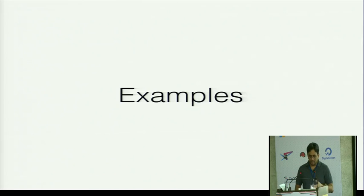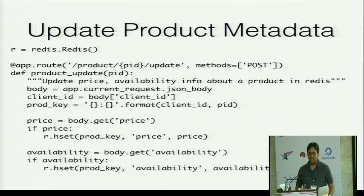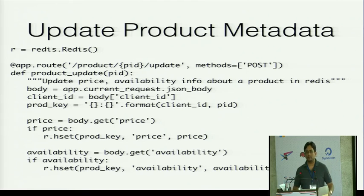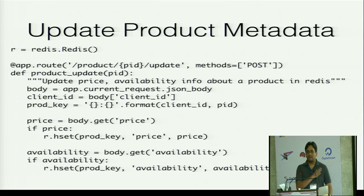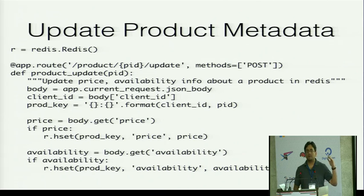One example is updating product metadata. The basic product we do for all customers is a recommendation engine — given a product, show similar products. Products can have metadata like name, image link, and price. Customers may want us to handle availability so that out-of-stock products are not shown in recommendations. This information comes to us in real time from clients. Previously it was cumbersome with cron jobs, but this Lambda function makes it much simpler — the client can push data to our system and it gets updated immediately.